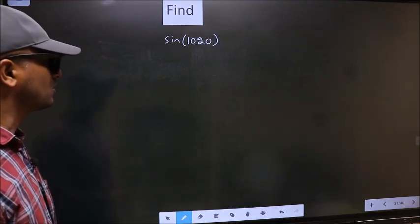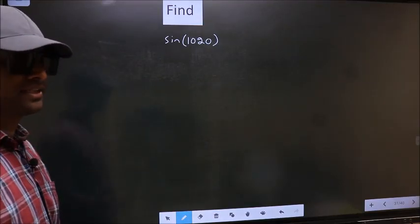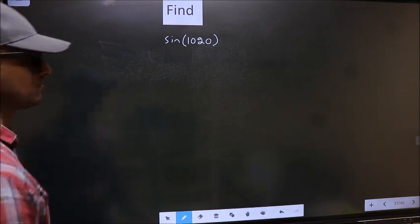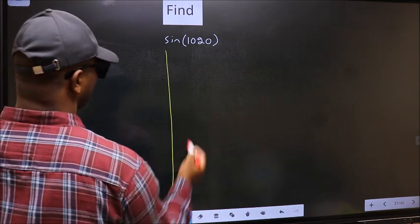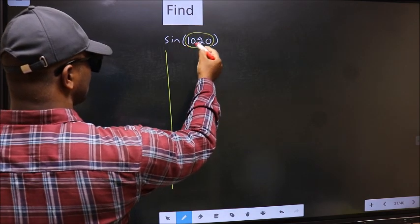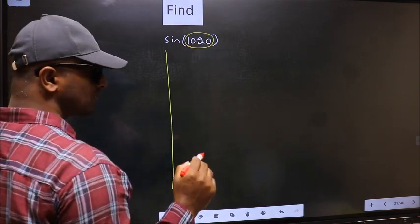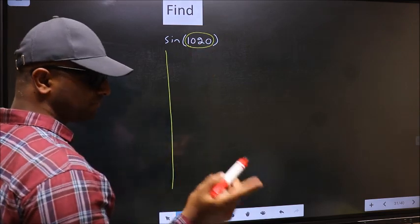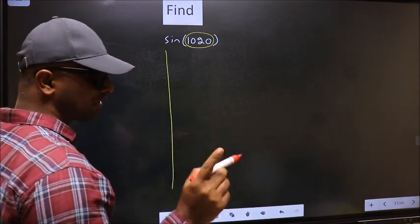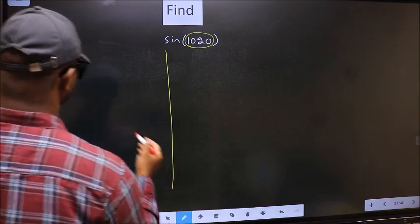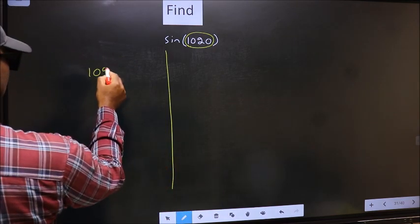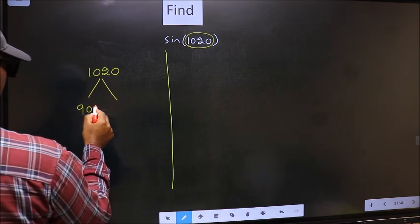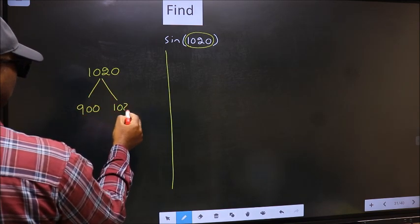Find sin(1020°). To find this, we should follow this method. See, here we have 1020. Now you should check 1020 lies between which two multiples of 180. What I mean is 1020 lies between 900 and 1080.